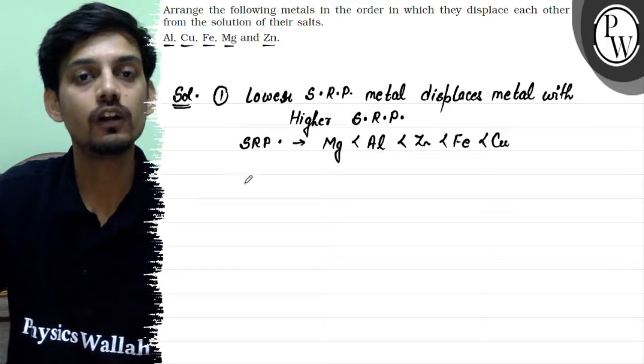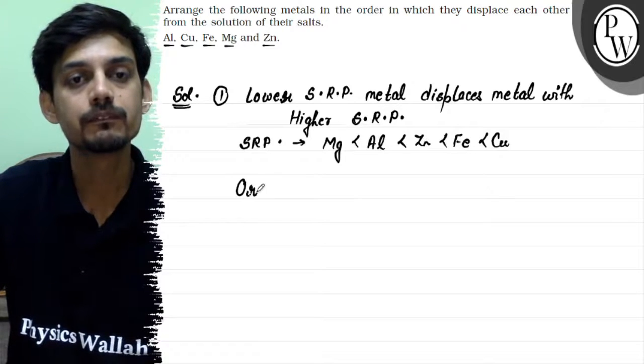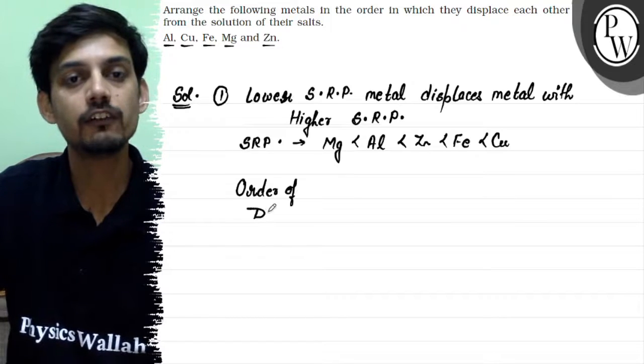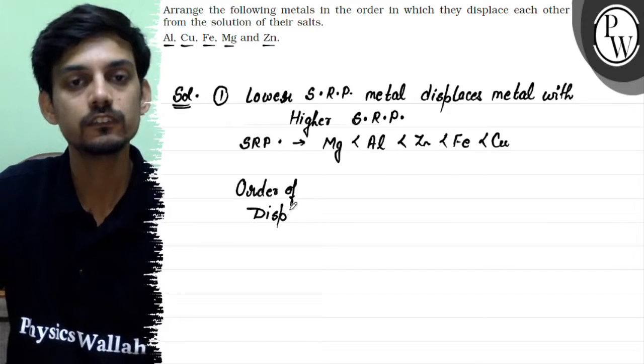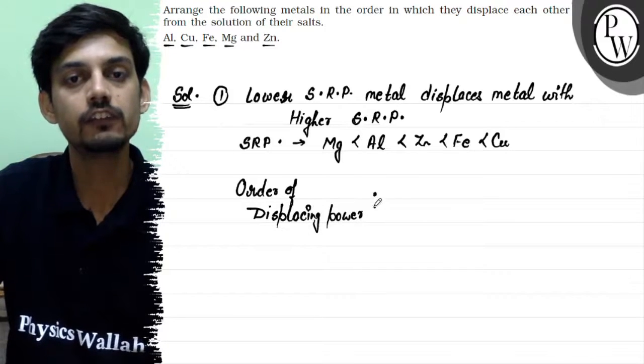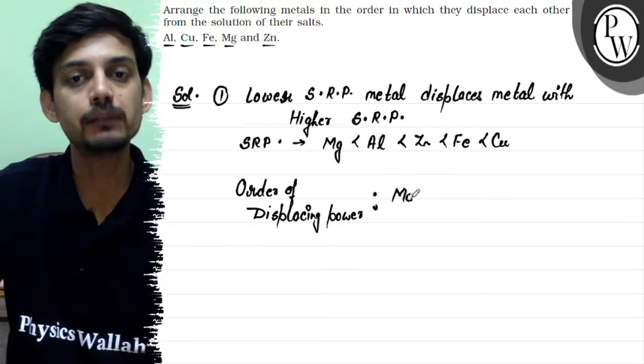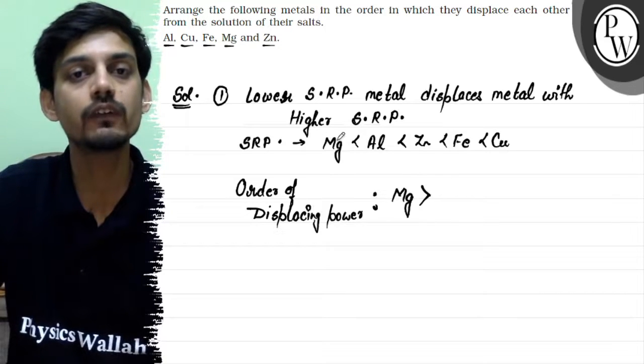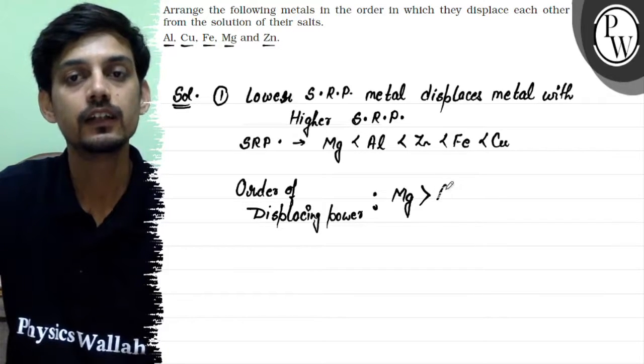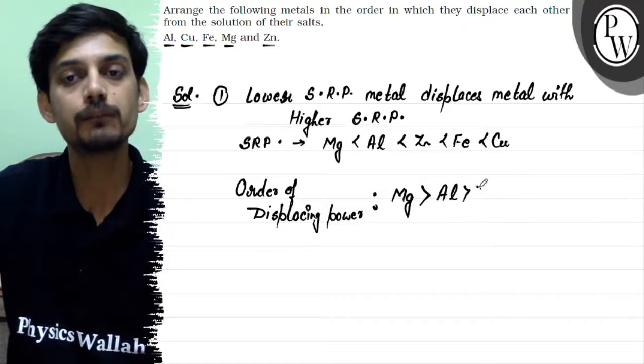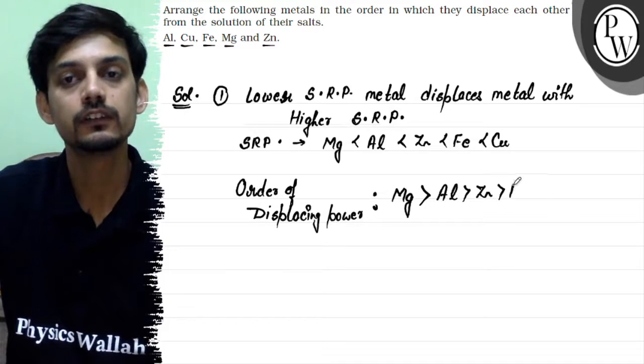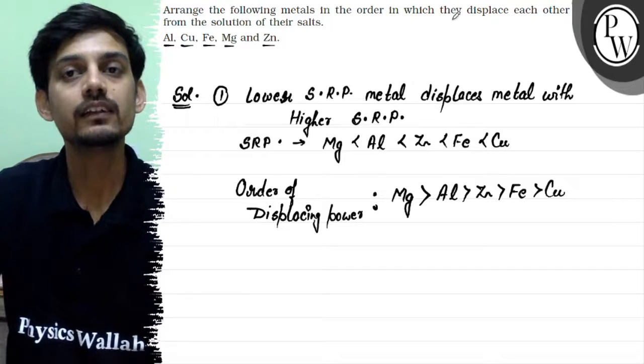So the order of displacing power will be: magnesium has the highest displacement power among the given metals since it has the lowest SRP, and the least displacing power will be of copper. So this will be the final order in which metals displace each other from the solution of their salts.